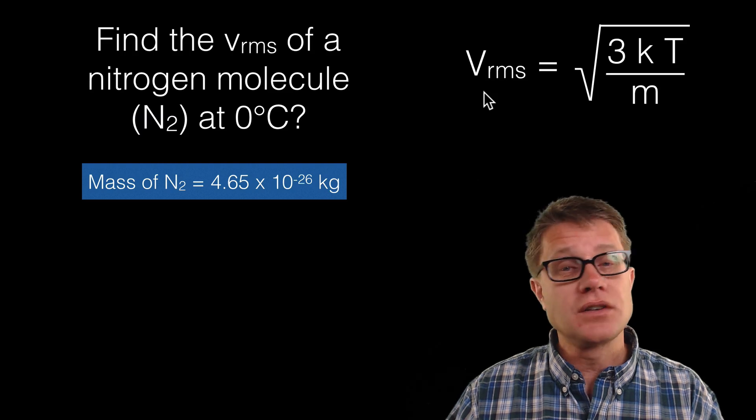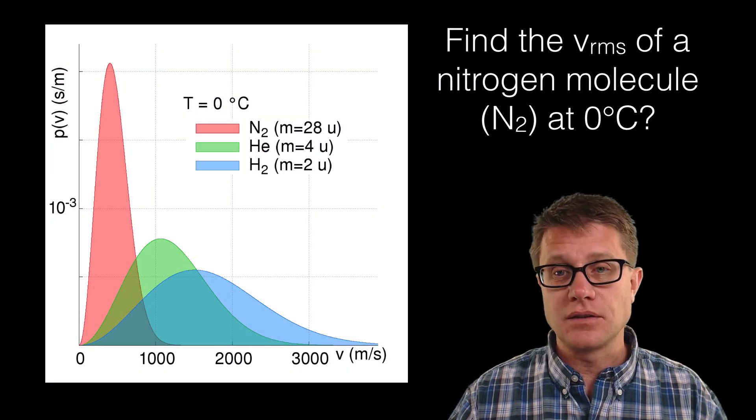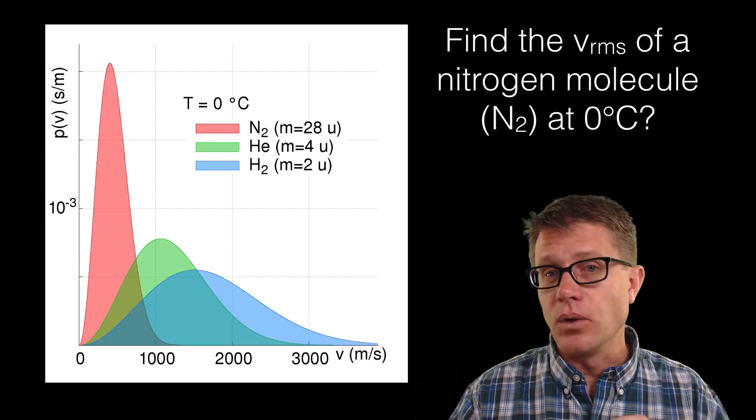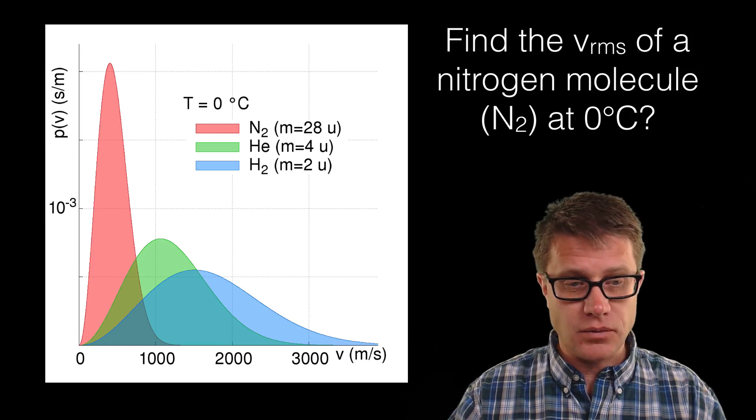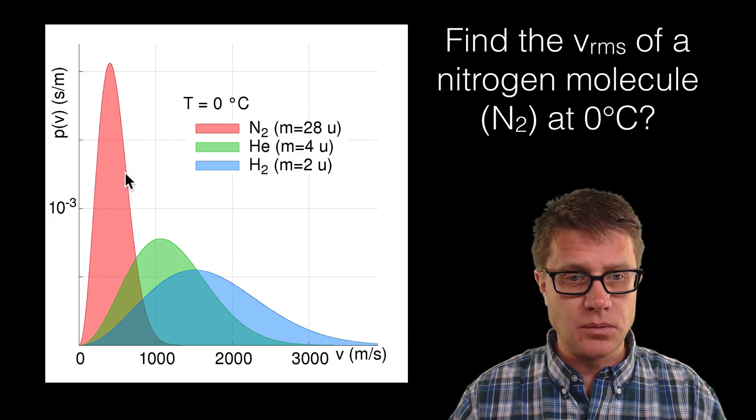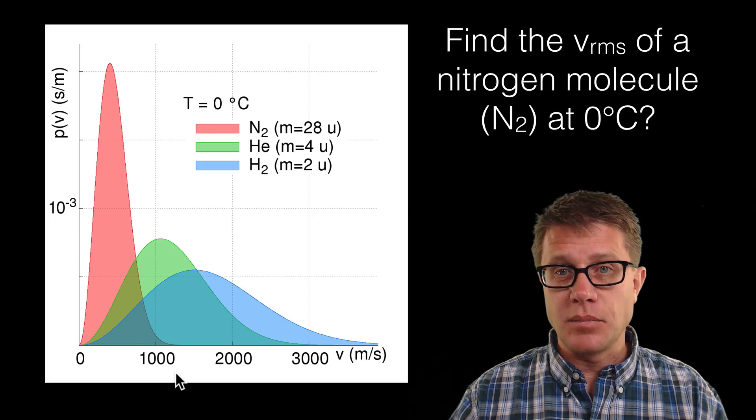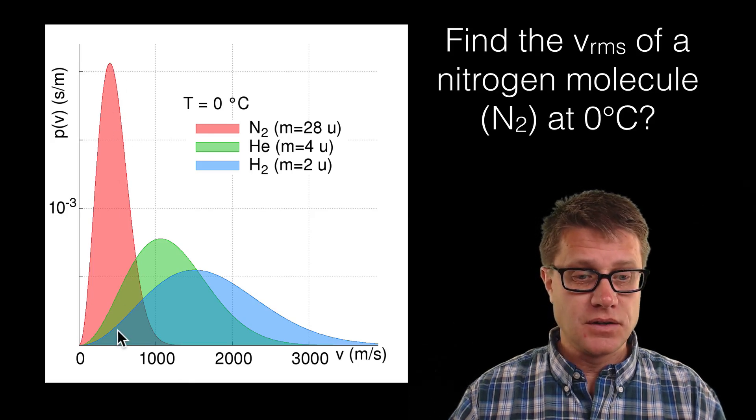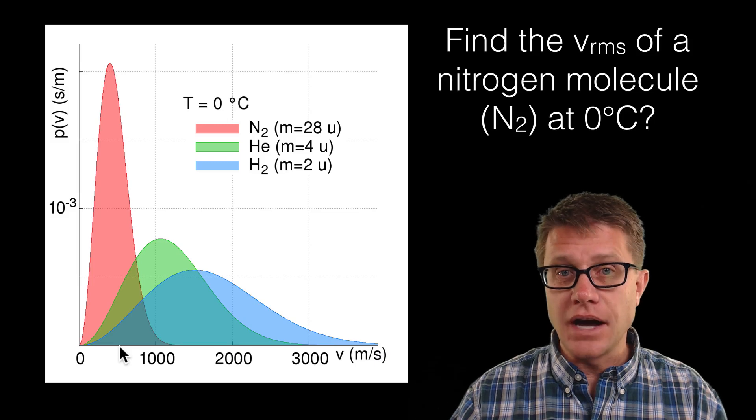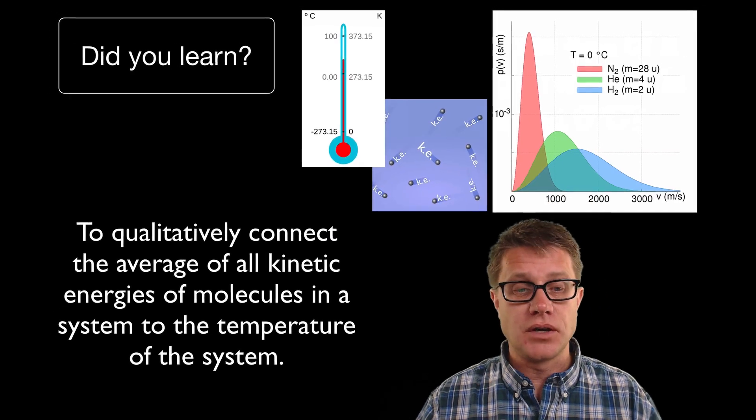But in AP Physics they do not want you to solve it quantitatively. They want you to be able to read a distribution like this. So let me pose the same question. What is the root mean square of a nitrogen molecule at 0 degrees Celsius? So reading this graph I would see that nitrogen is going to be the red. You can see that nice distribution like this. We are reading velocities on the bottom. And so if I were to approximate off to the right here I would say it is going to be a little over 500 meters per second. And so you can read the distribution to figure it out.